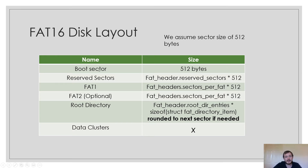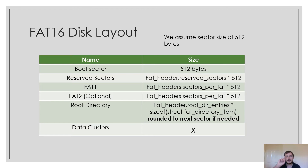After the boot sector in the file allocation table we have the reserved sectors. These are sectors we don't want included as part of the file system. The boot sector has a field that specifies how many reserved sectors we have, and that number also includes the boot sector itself. If you don't have any reserved sectors then the reserved sector field should contain one because the boot sector still counts as a reserved sector. The size of the reserved sectors is the reserved sectors field multiplied by 512, because 512 is the sector size on hard disks.